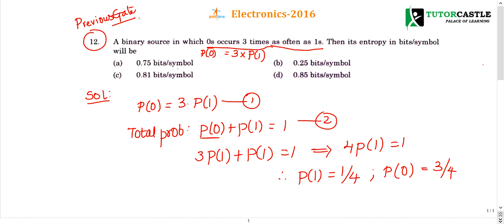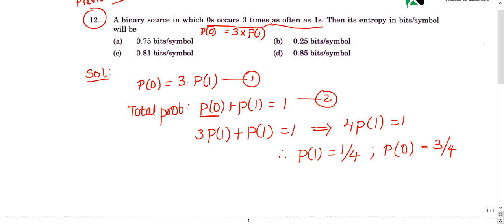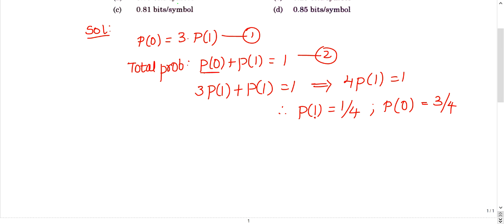Now we are ready with the probabilities. One and zero indicate symbols, just like question number 10 we did previously. This indicates probability p of one. Now let's do entropy. He's asking entropy.